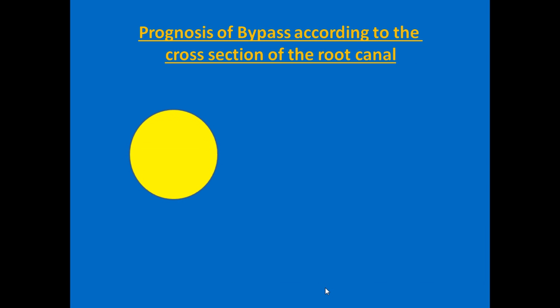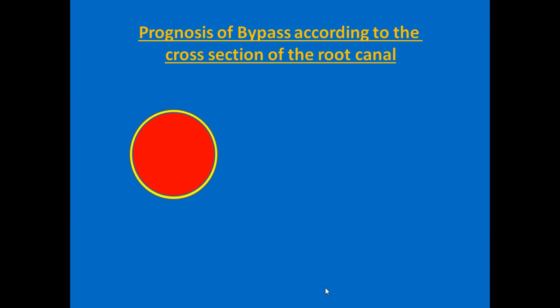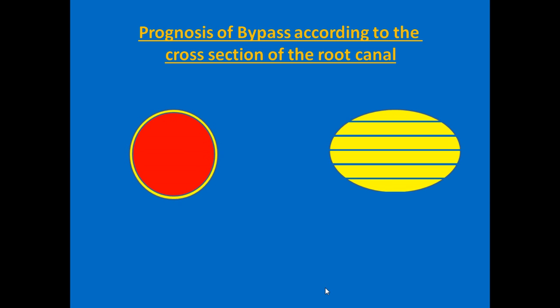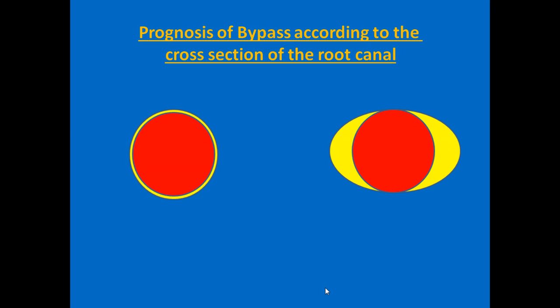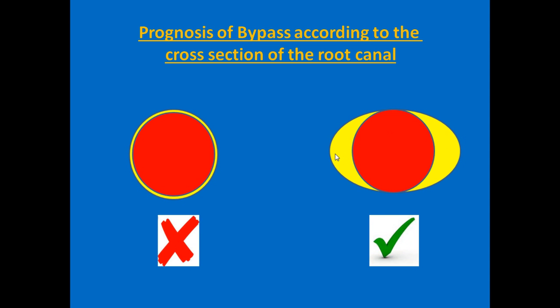Whenever we have a circular cross-section of a root canal, the instrument fractures leaving very little space for bypassing. But when we have an elliptical shaped canal, the fractured instrument will leave space buccally and lingually for bypassing. So in the circular canal it is difficult to bypass, but in the elliptical it is much easier.